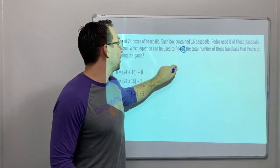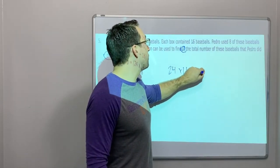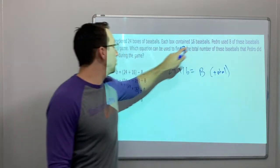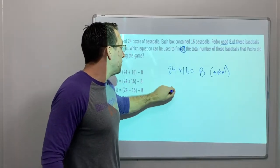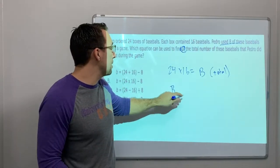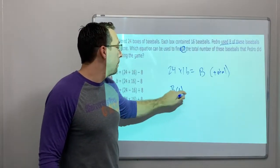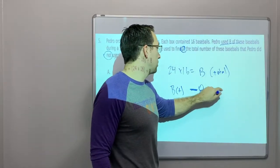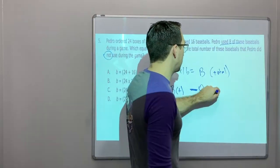24 times 16. 24 times 16 equals baseballs total. And then he used 8 of these. So we have B total. What's 24 times 16? Then we're going to subtract. This is the T for total minus 8 equals baseball lowercase, because that's the question B.